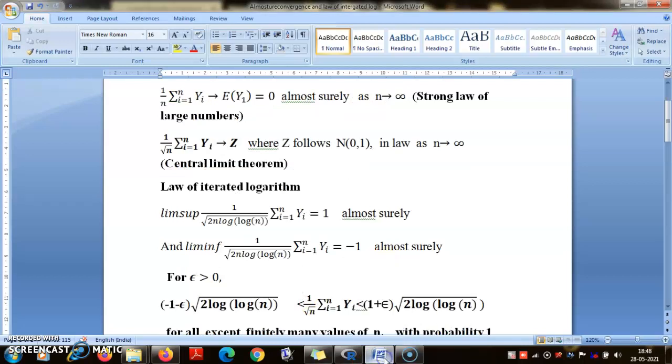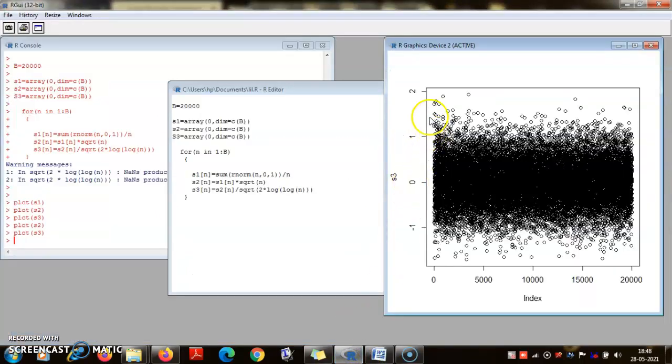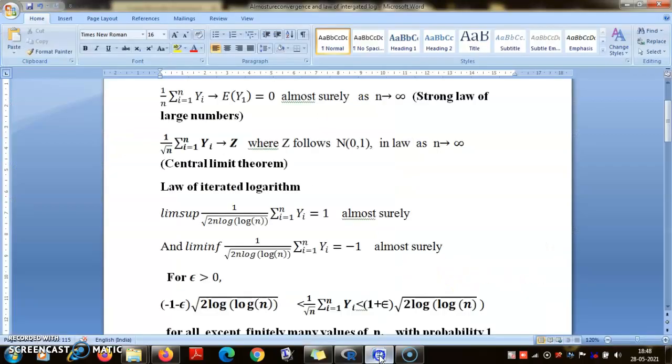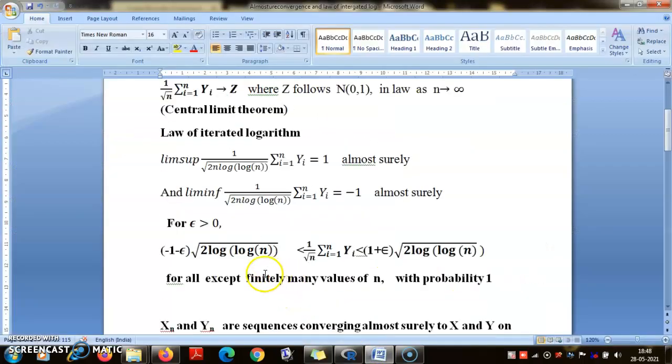If we slightly go beyond -1 and +1, say here and here, it looks like the values are bounded. This is what the result tells: for all except finitely many values of n. This is what this law is all about.